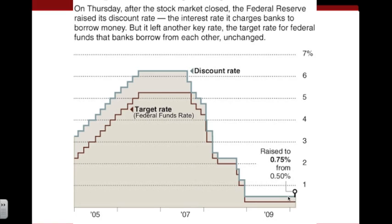What does this tell us? The Federal Reserve is attempting at different times to have different results. At the 6% and 5% rate, they were trying to moderate the economy — slow it down and keep it under control in terms of inflation. More recently, they've been trying to keep the economy growing, so by lowering these rates and making credit more easily available to banks and thus to individuals, the Federal Reserve is attempting to stimulate the economy. Interest rates play a big part in lending, borrowing, and saving.